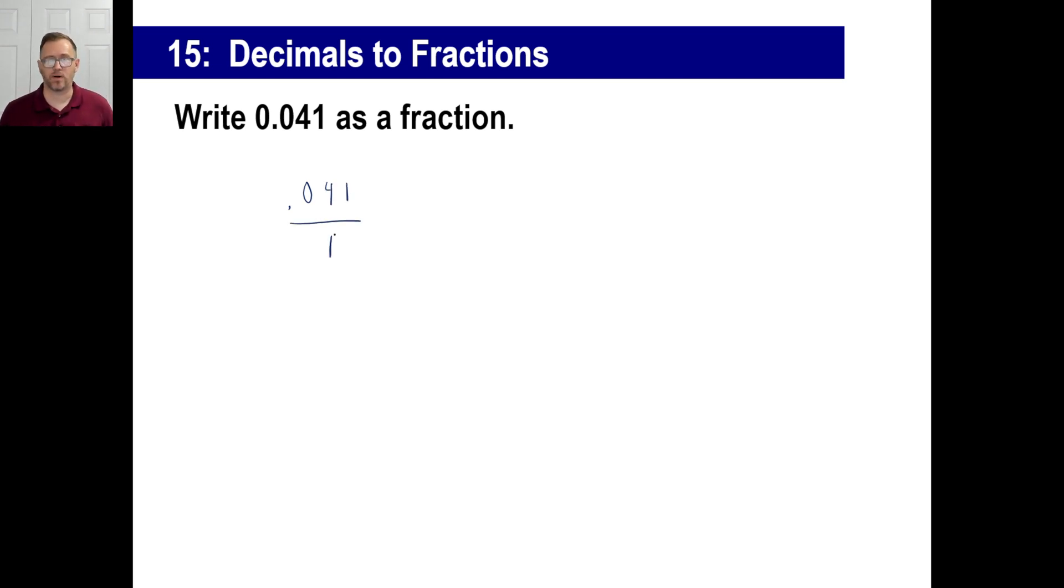So we can write it as a fraction, 0.041 over one. Now, again, what they probably want us to do is have a fraction with integers. That's what the usual standard is. So to make this an integer, we're going to have to move that decimal place over three times. So one, two, three, that's going to give us a 41.